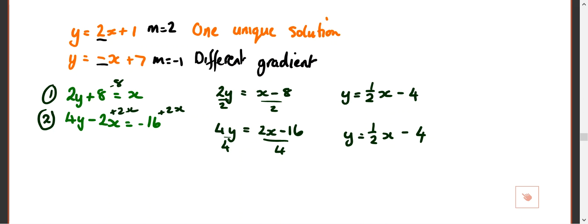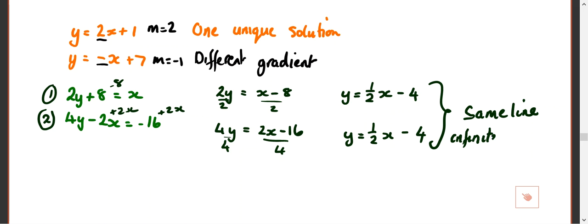So now you can see — they're the same line. Same line, which means there are an infinite number of solutions, because they're the same line.